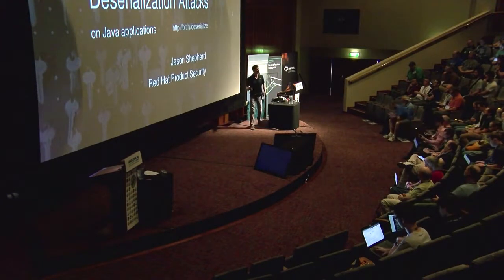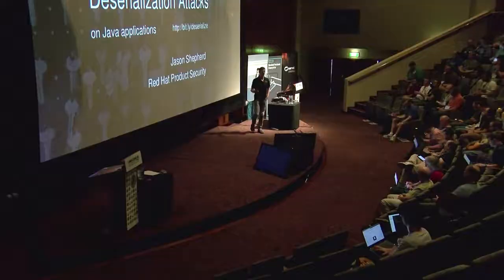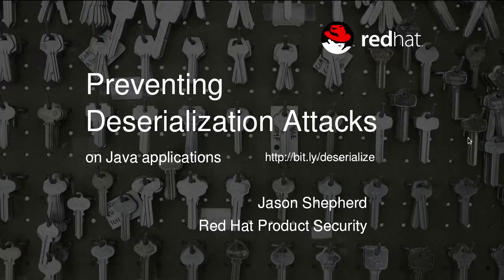Today I'm going to talk about Java — a new Java attack vector: deserialization. It's something in Java that's been around for a while, but last year became a bit more popular, and we've seen a lot of exploits come out in the last year about it.